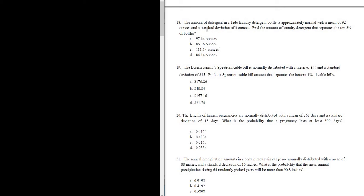Let's do problem number 18. The amount of detergent in a Tide laundry detergent bottle is approximately normal with a mean of 92 ounces and a standard deviation of 3 ounces. So they're telling us it's normal, and they're giving us the mean and standard deviation. So let's go ahead and write that down.